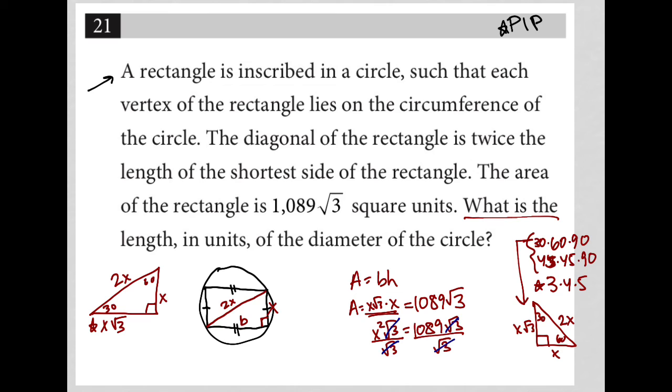My root 3s cancel out on both sides. I'm going to go up here for more space. I'm left with X squared equals 1089. I'm going to then take the square root of 1089, go to my calculator, and see what I get. I get 33, so X is equal to 33.